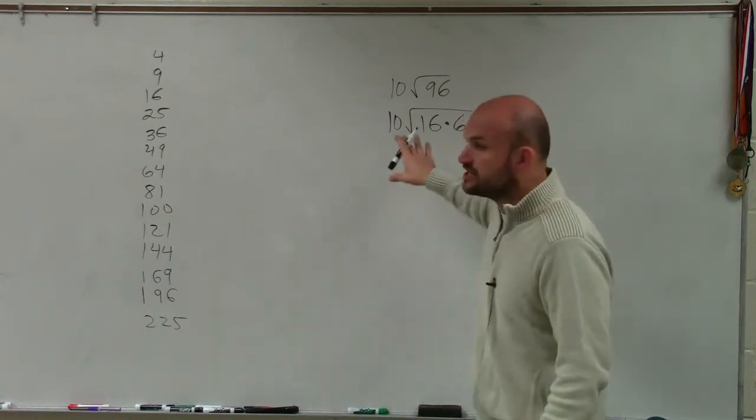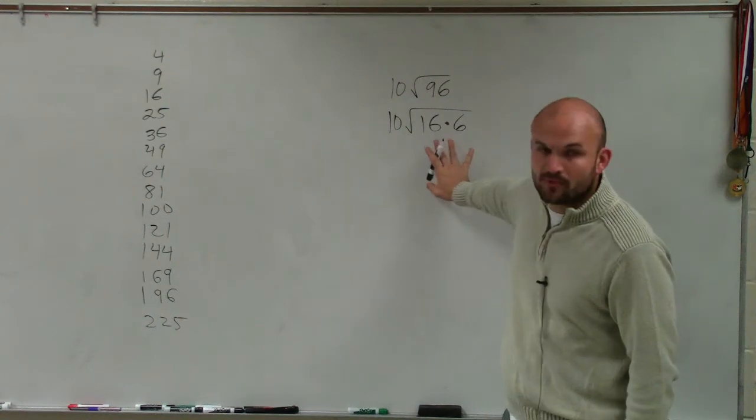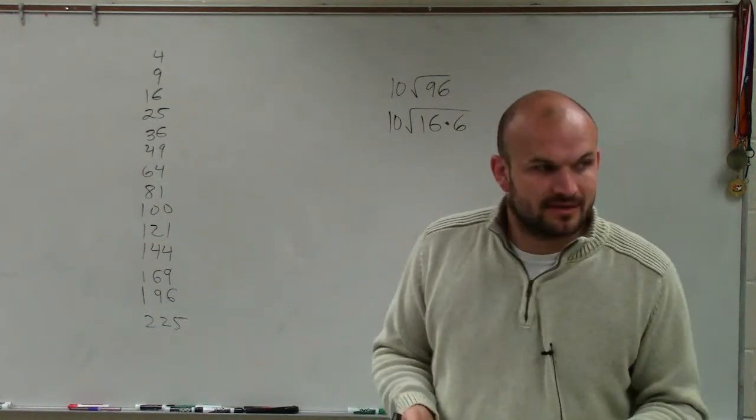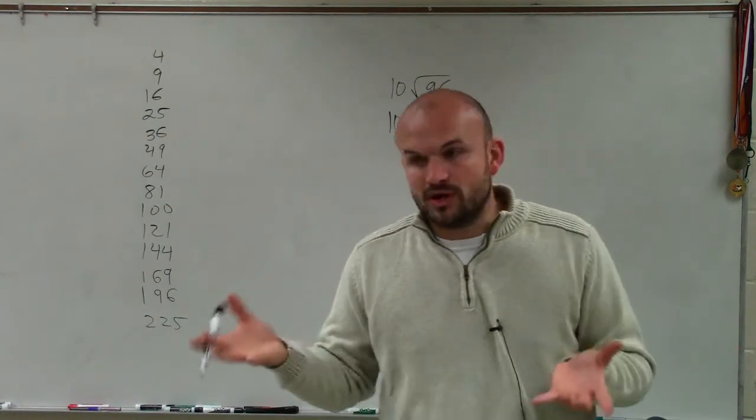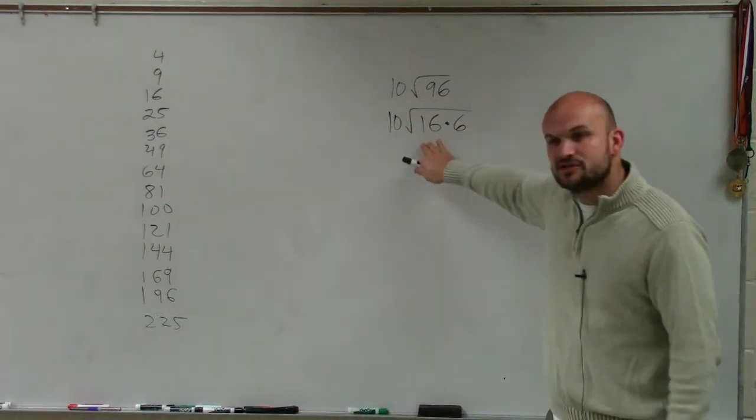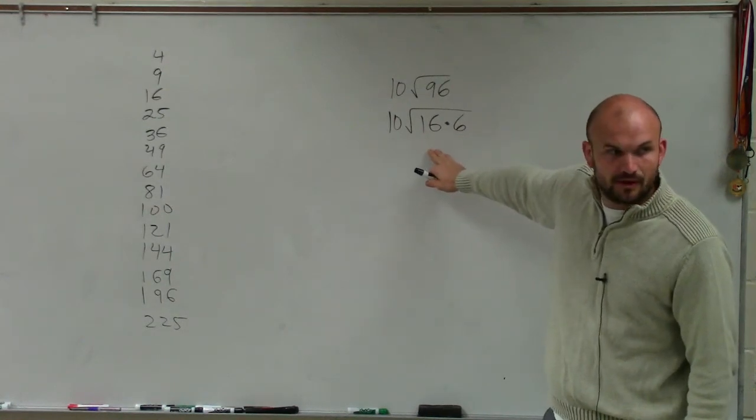So all I'm doing is I'm just rewriting it. I'm just rewriting it as a product. But what's nice about writing it as a product, when you write it as a product of two square numbers, what you can do now is you can take the square root of your square number. That's why we want to pick numbers that we can take the square of. All right?